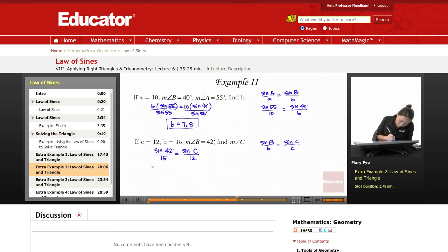Cross multiply. 15 sine of C equals 12 sine of 42. Divide the 15. Sine of C is equal to 12 times the sine of 42. So I'm going to use 0.5353, divide it by 15.